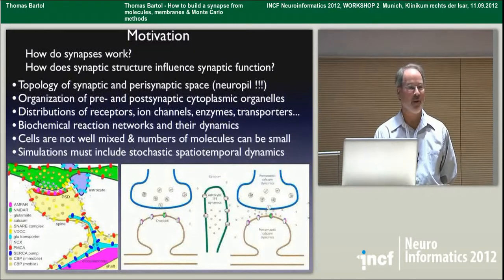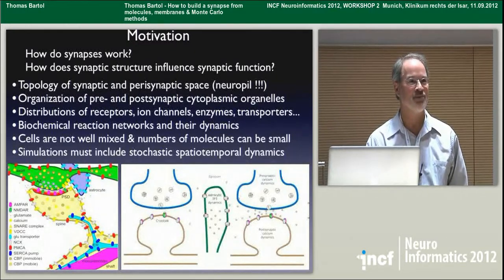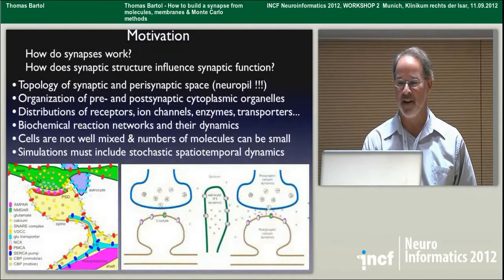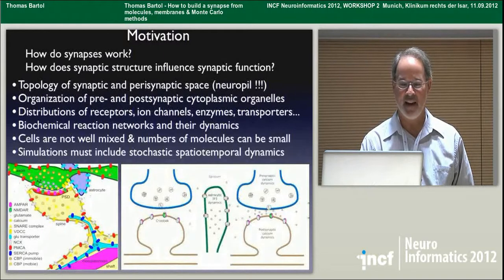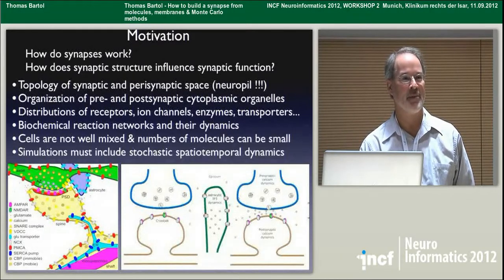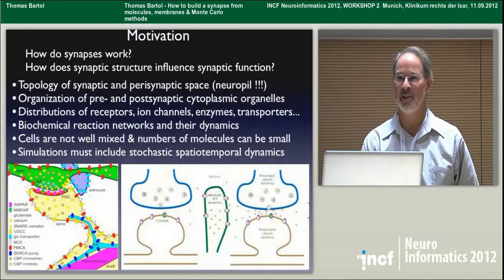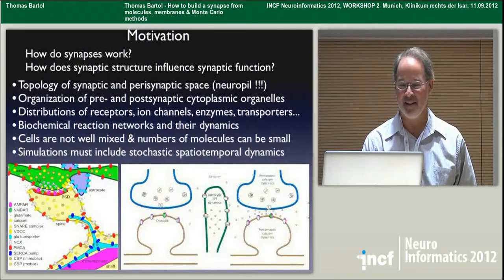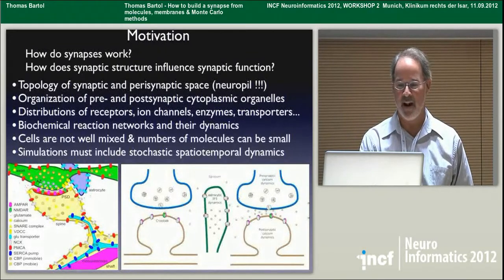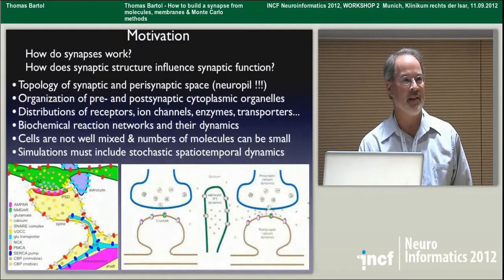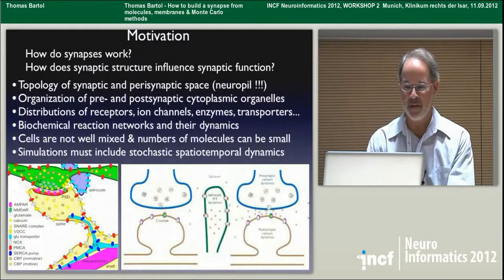We need to know the organization of the pre- and post-synaptic cytoplasmic organelles, and the distributions of receptors, ion channels, enzymes, and transporters throughout these structures, because the biochemical reaction networks and their dynamics are occurring in space that is not well mixed. The numbers of molecules can be very small in synapses — the number of molecules in a spine head can be very, very small — and so the reactions occur stochastically.